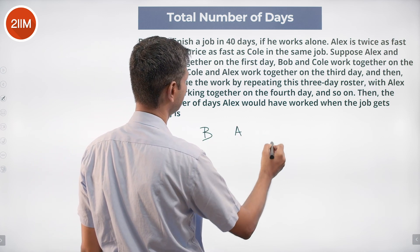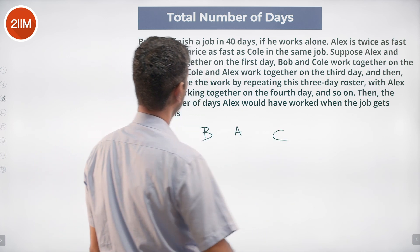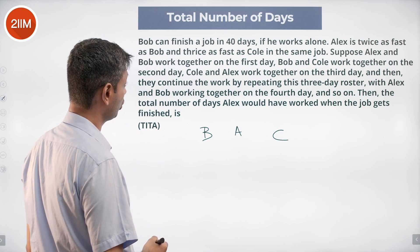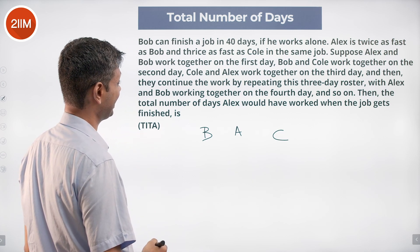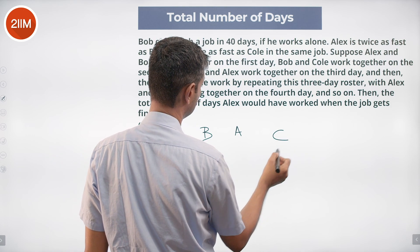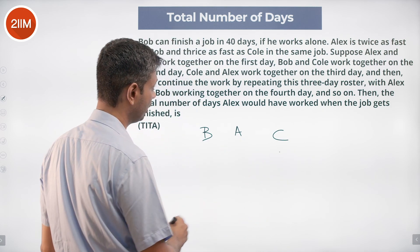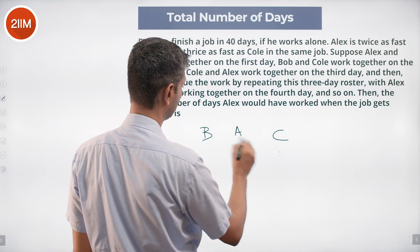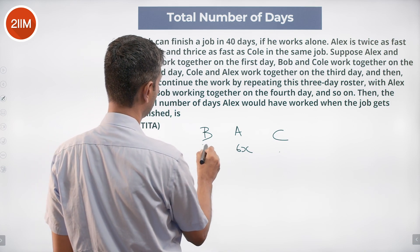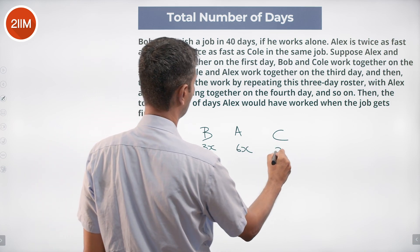Bob, Alex, Cole. Since Alex is twice as fast as Bob and thrice as fast as Cole, if Alex does 6x per day, then Bob will be 3x per day and Cole will be 2x per day.